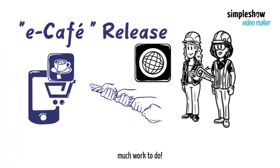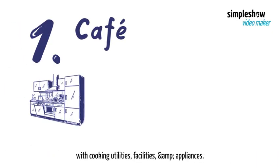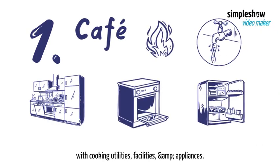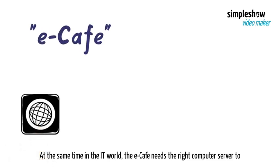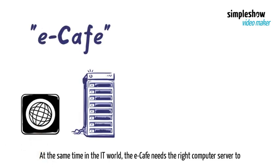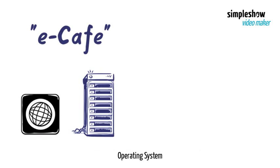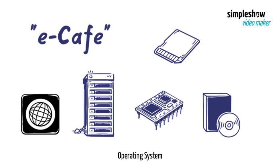There is much work to do. First of all, the cafe needs a building with a kitchen, so Bobbi builds a store with cooking utilities, facilities, and appliances. At the same time in the IT world, the eCafe needs the right computer server to run, so IT Bobbi provisions a host server with the right CPU, memory, and operating system.